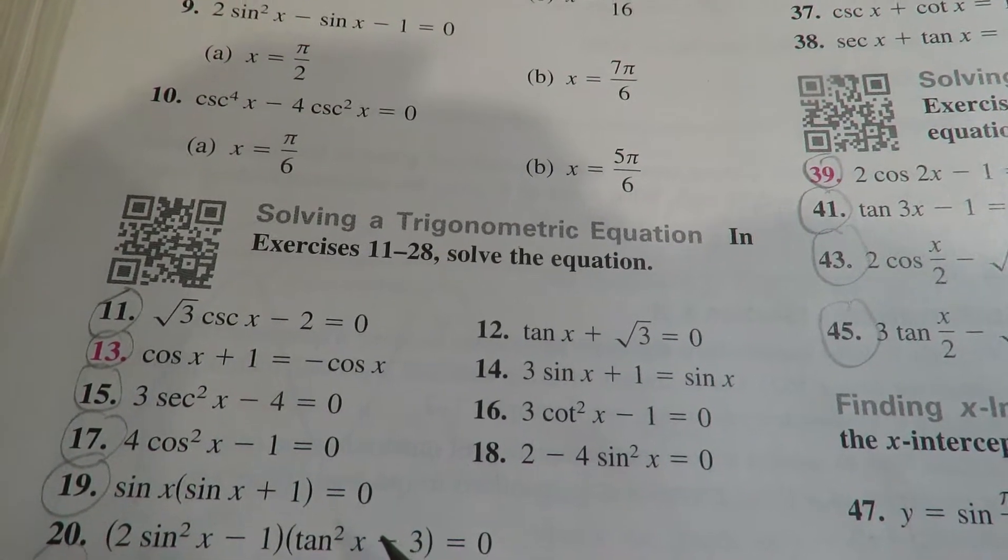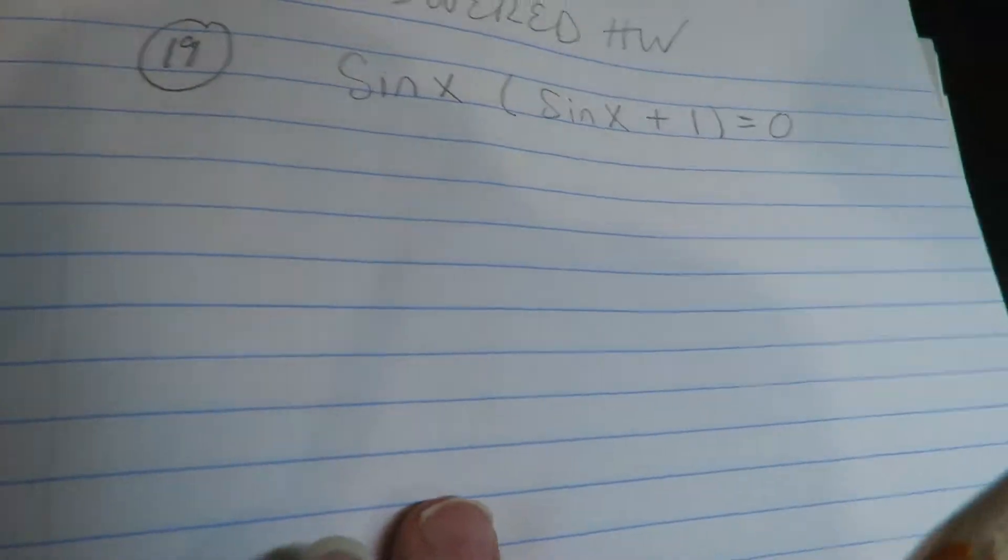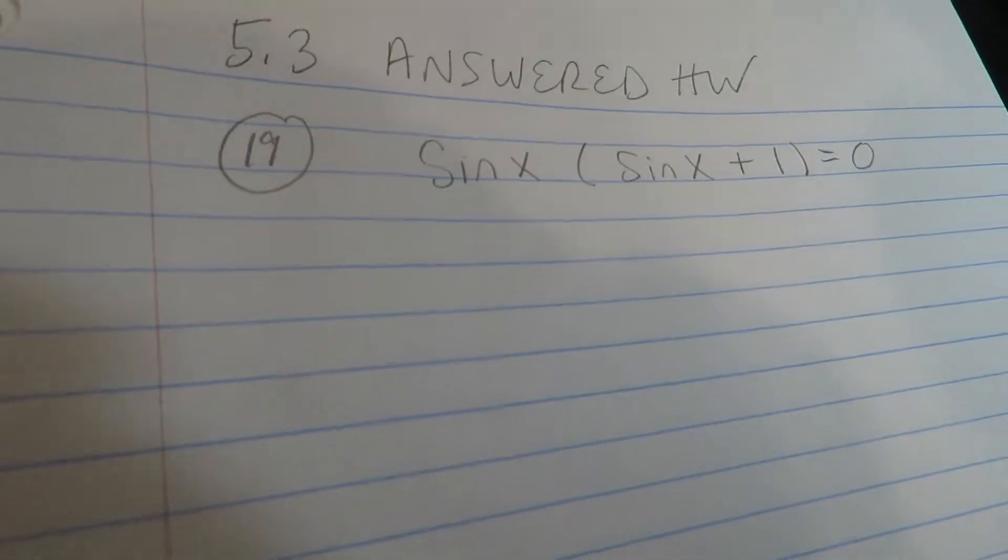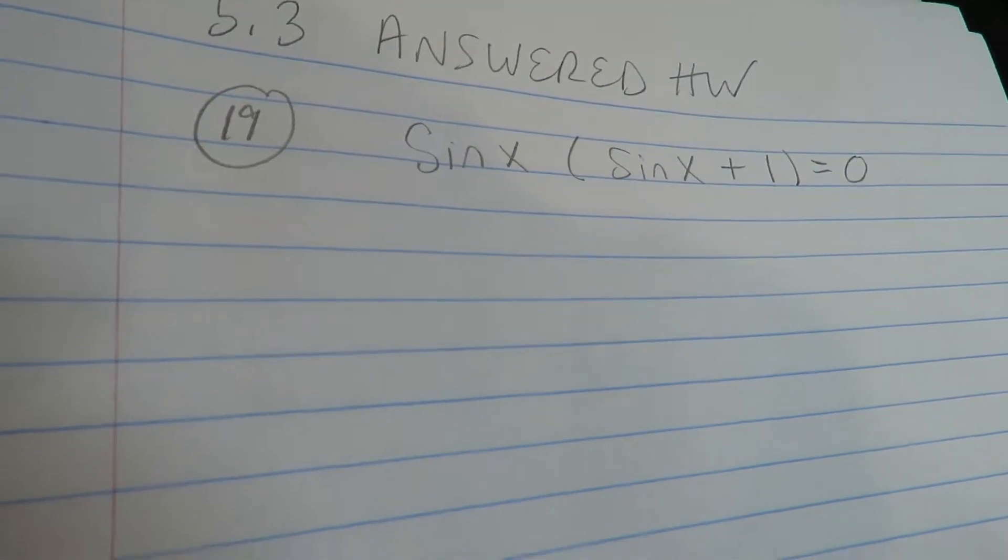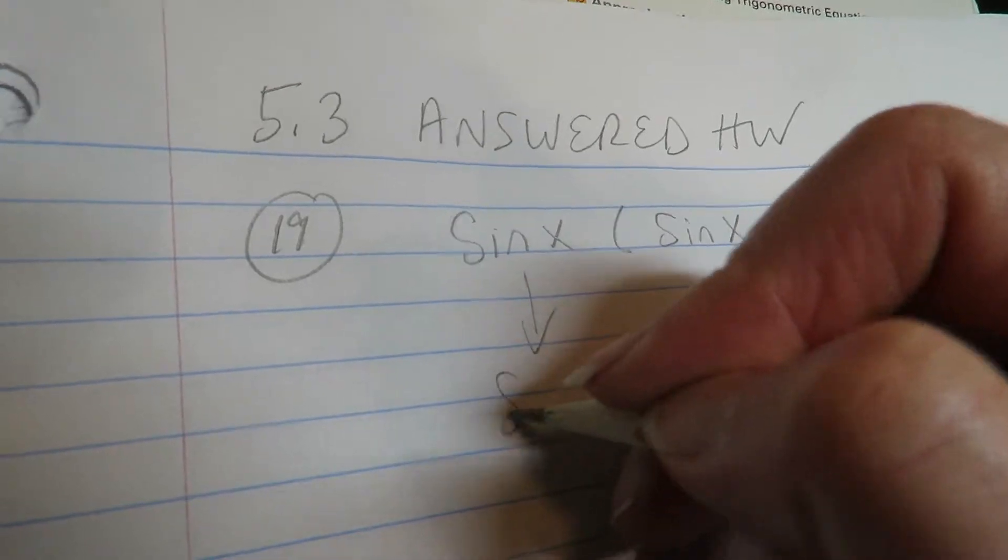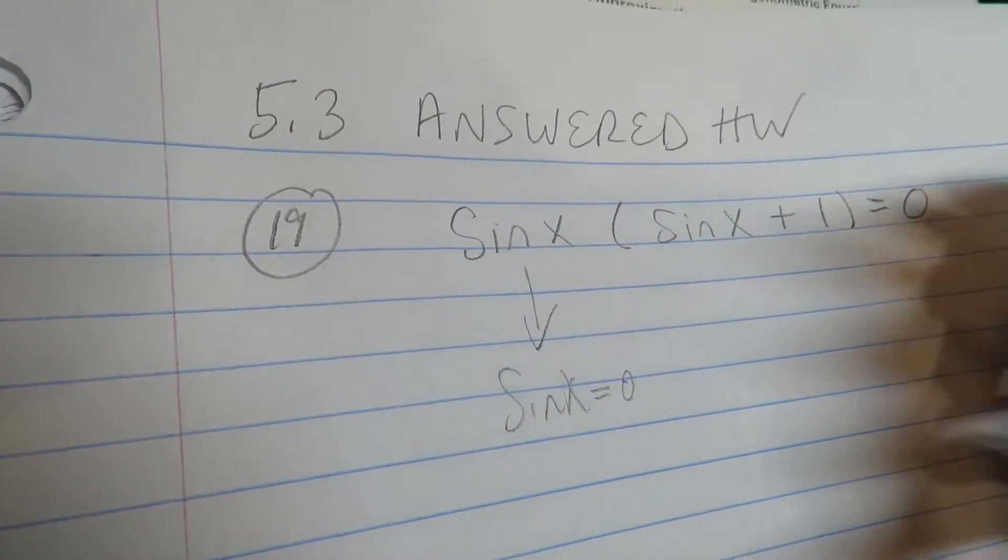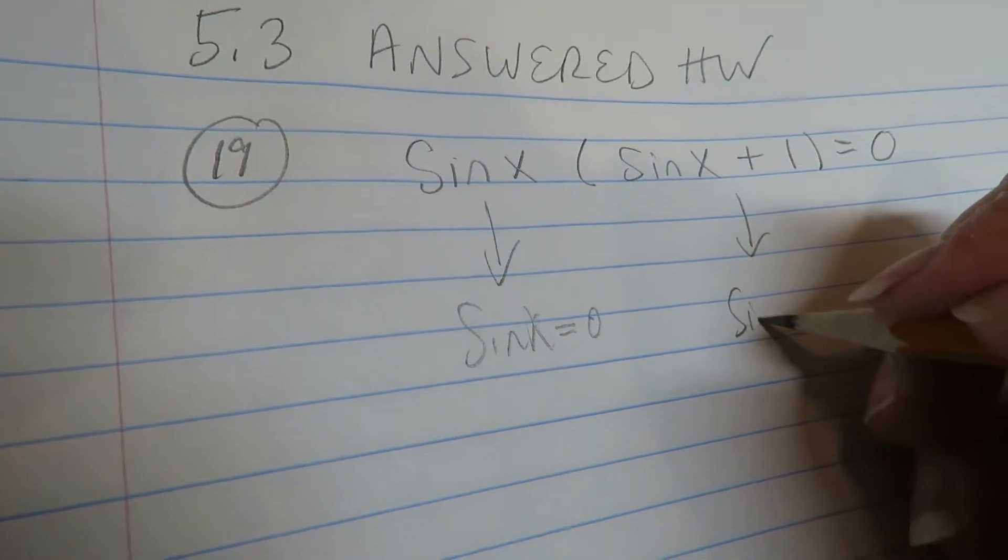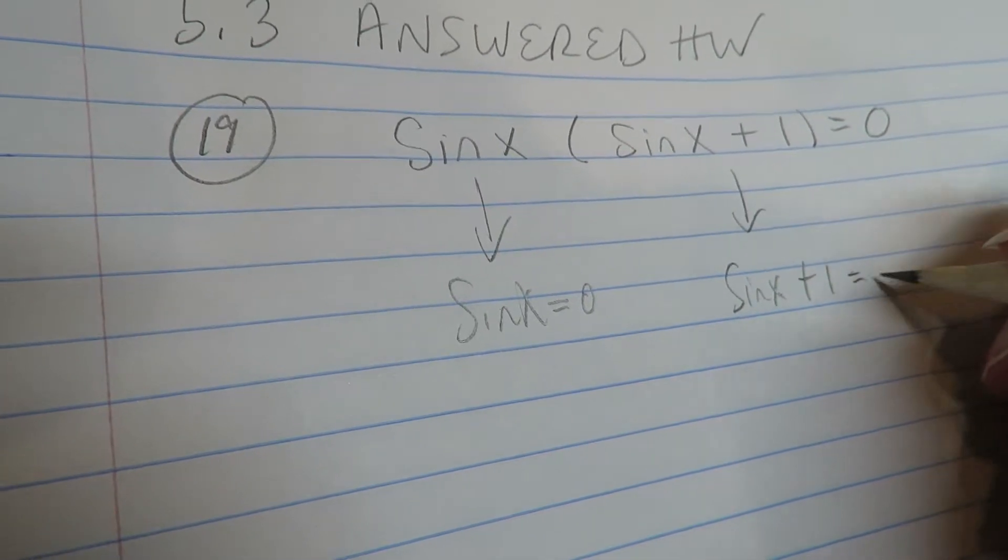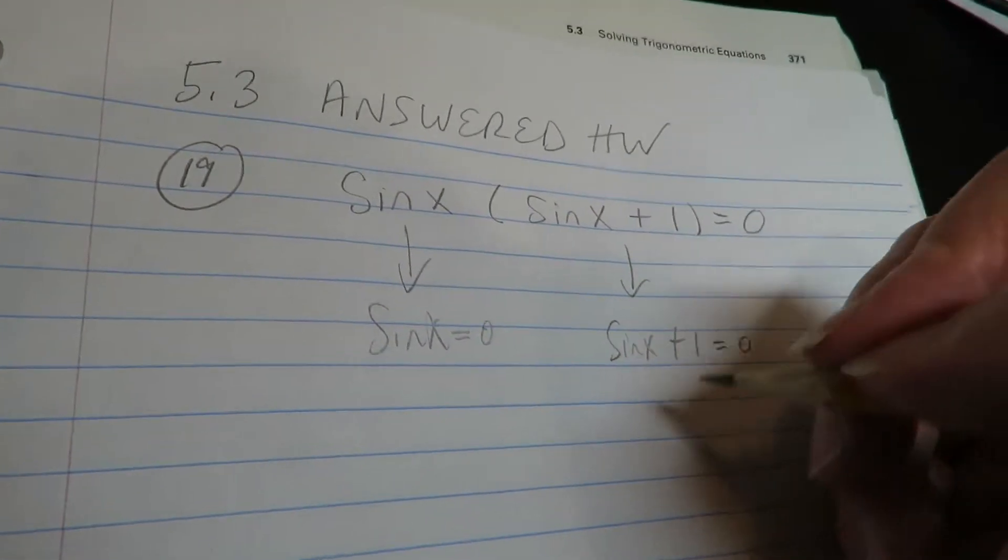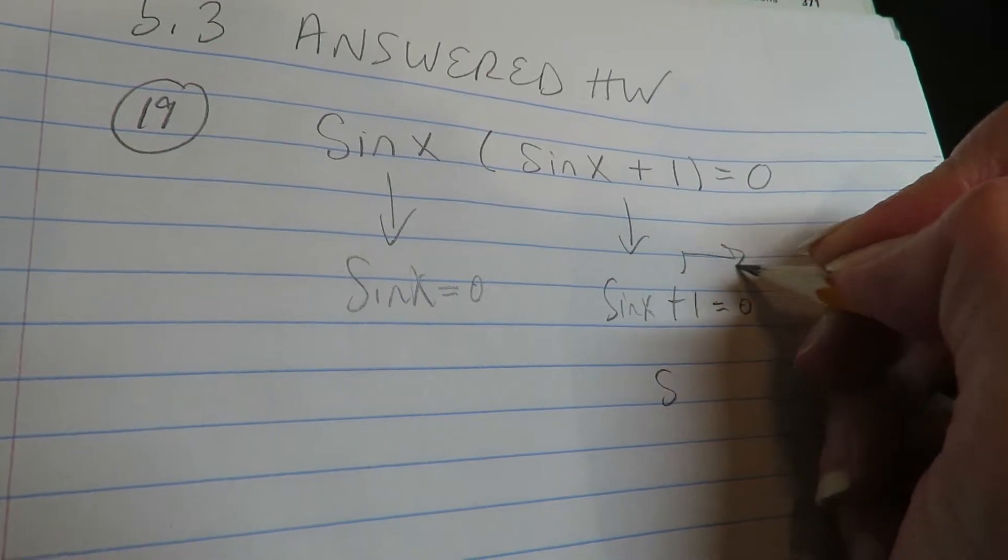Alright, so I'm going to solve this one here, number 19. Now it's already factored, so we're good with that. Let me see if I can fix this. Okay, we're good with that. So I'm just going to set each piece equal to zero. I'm going to move the one over on this one.